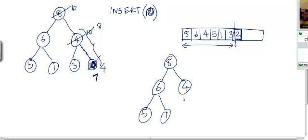So the heap is 8, 6, 4, 5, 1, 3. Now we add a 7 here. Now the heap property is destroyed here because 4 is less than 7 now. So if we swap this element with 4, this becomes 7 and this becomes 4.